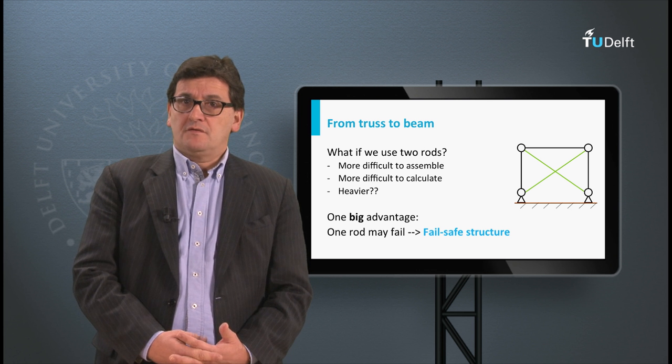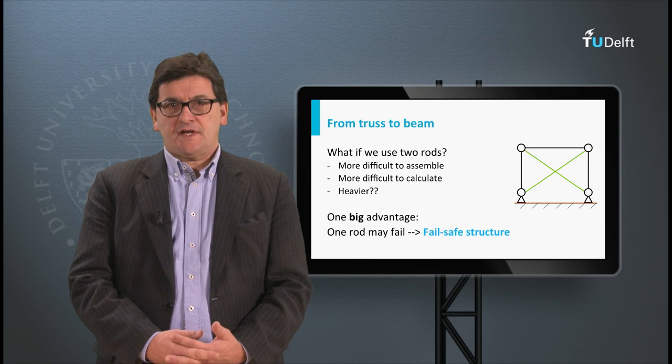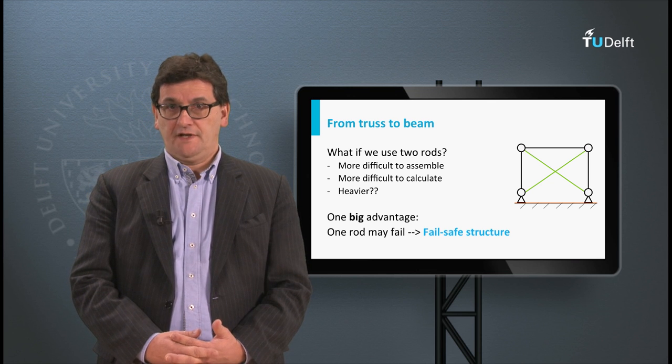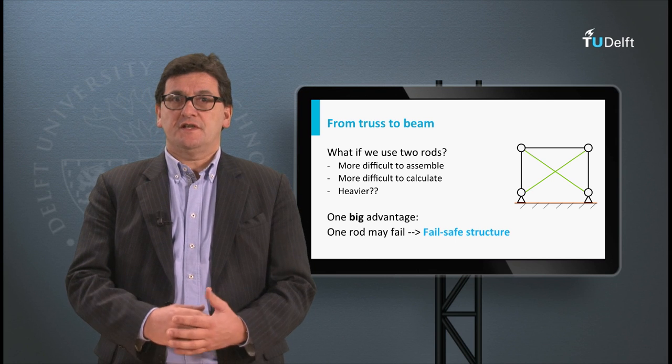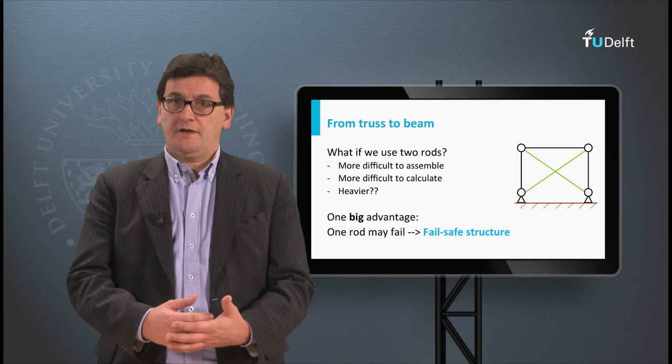But the two diagonals also provide an advantage. The truss has become fail-safe. In other words, if one of the elements fails, the truss is still able to carry the load.